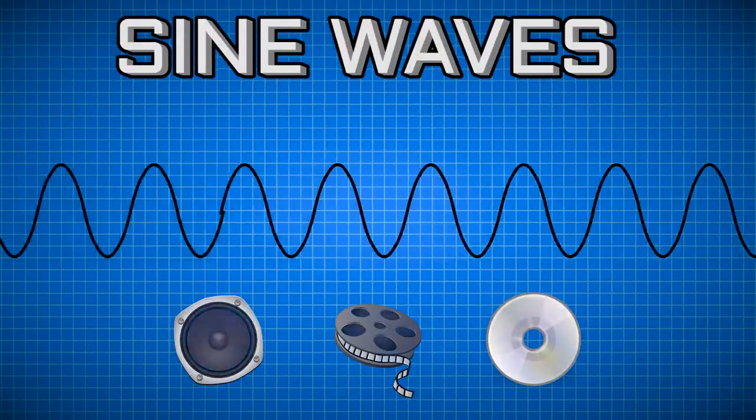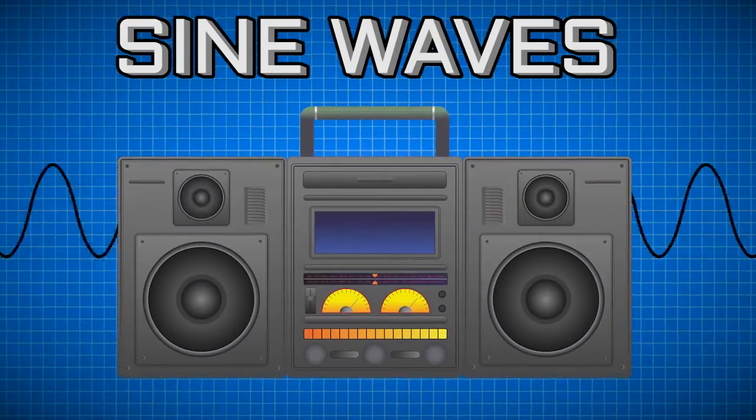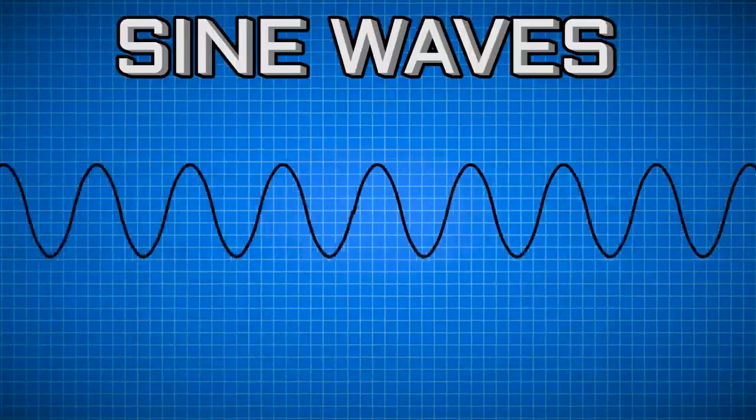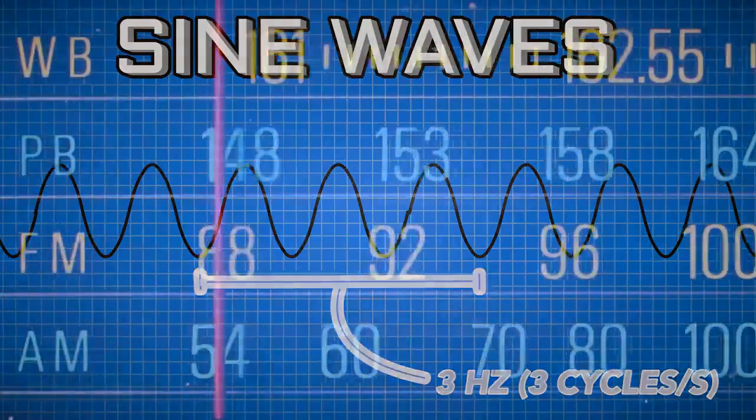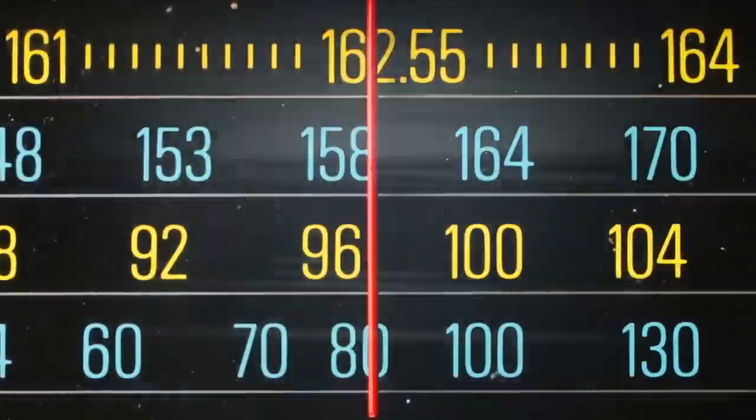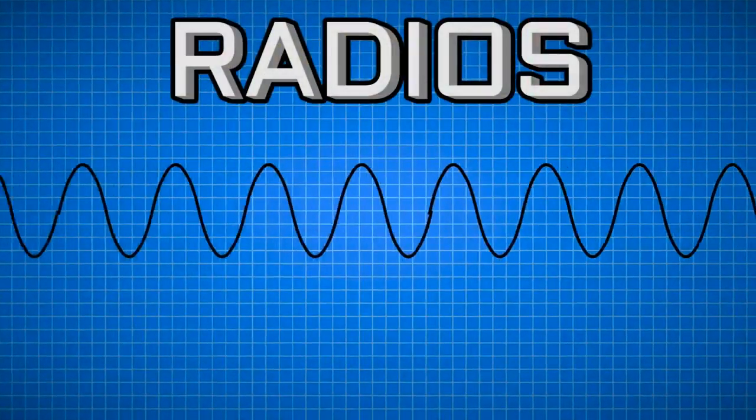By utilizing sine waves for transmission, radios and devices can distinguish different channels based on frequency, or the number of cycles in the sine wave per second. This allows tens to hundreds to thousands of channels on modern radios, all in the same space without too much interference.